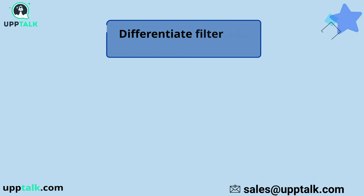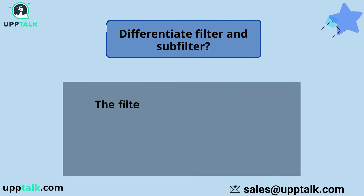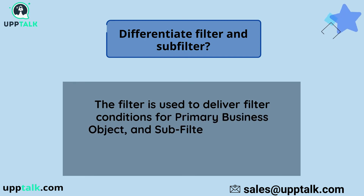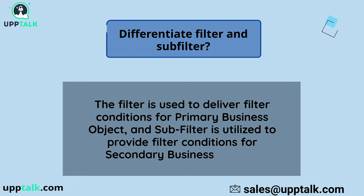Differentiate Filter and Subfilter. The filter is used to deliver filter conditions for the primary business object, and the subfilter is utilized to provide filter conditions for the secondary business object.